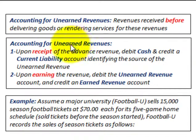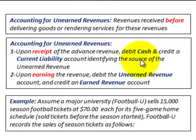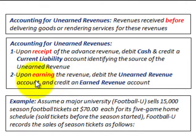When we're accounting for these unearned revenues, there are two things we have to do. Number one, upon receipt of the advanced revenue, you'd be debiting cash and you'd credit a current liability account identifying the source of the unearned revenue. And number two, upon earning the revenue, you would debit an unearned revenue account and you'd credit an earned revenue account.